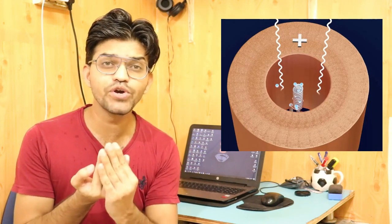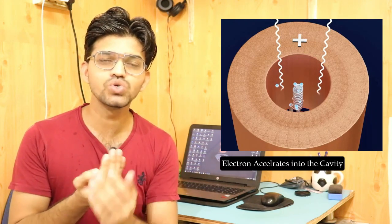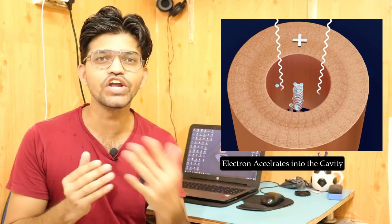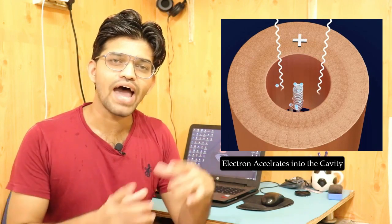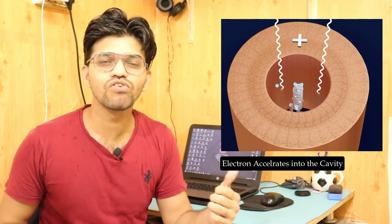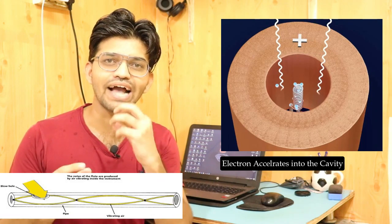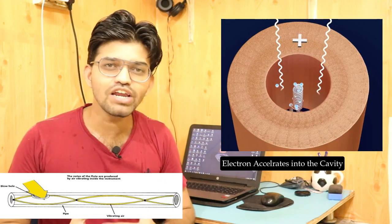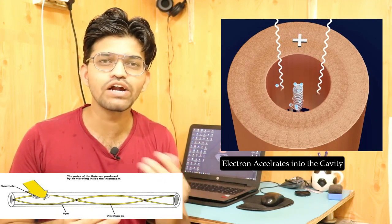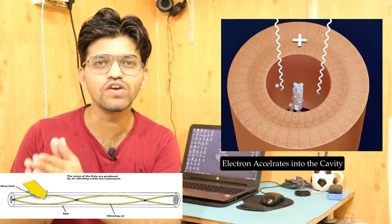These emitted electrons accelerate into that particular cavity, and due to this acceleration, the radio waves are produced. Similarly, just as in the flute example where air particles accelerate into the cavity and sound is produced, here the electrons accelerate into the cavity and radio waves are produced.